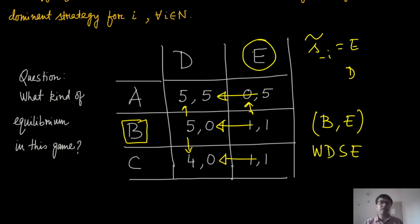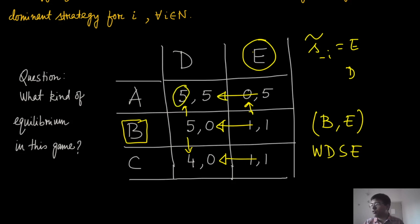Similarly, for Player 2, e is the weakly dominant strategy — it strictly dominates the other strategies in relevant cases. Therefore, (b, e) is the weakly dominant strategy equilibrium. If you change the value 5 to 4 and 1 to 0, you can make b a strictly dominant strategy for Player 1, and similarly adjusting a number to 4 gives a strictly dominant strategy for Player 2.